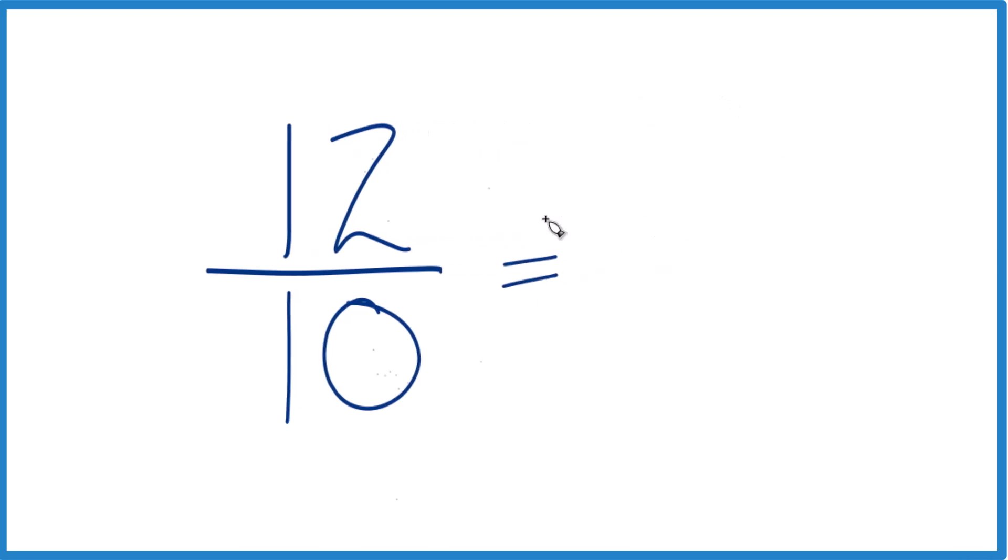Because 12 divided by 2 is 6, and then 10 divided by 2 is 5. And there's no common factor other than 1 here, so this is in lowest terms. We can't reduce this any further. So when you simplify 12 tenths, you get 6 fifths.